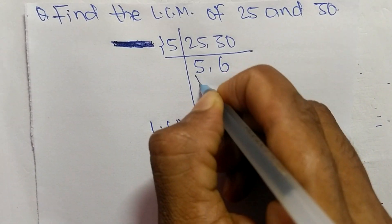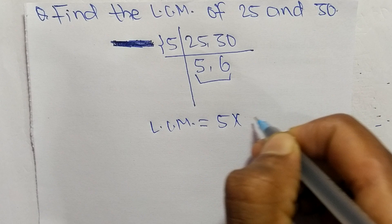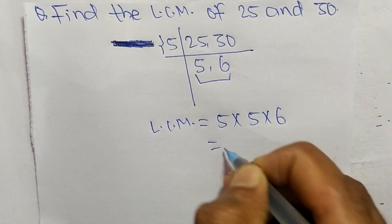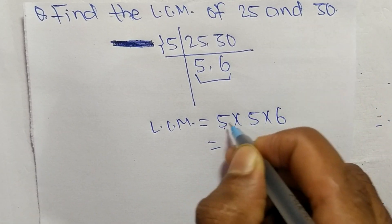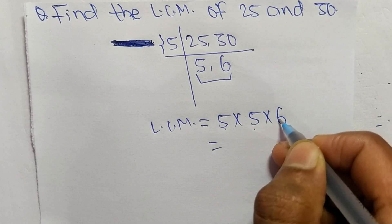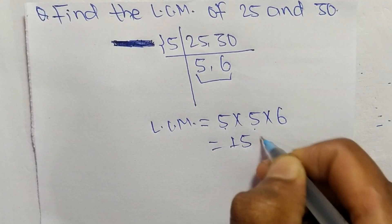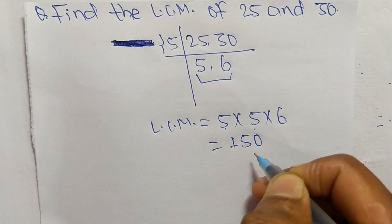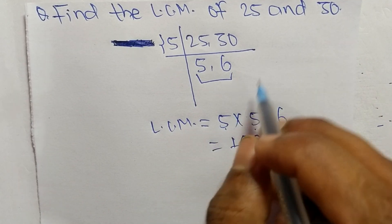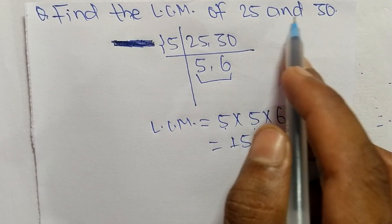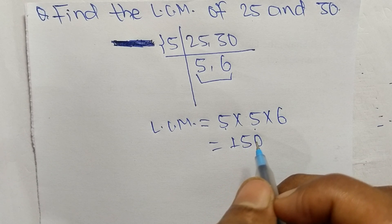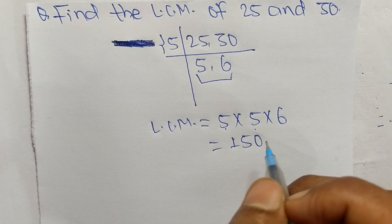From this we have 5, 5, and 6. So 5 times 5 equals 25, and 25 times 6 equals 150. Therefore, 150 is the LCM of 25 and 30. That's all for today — thanks for watching!